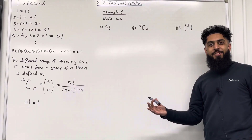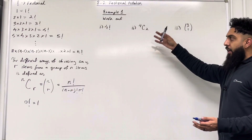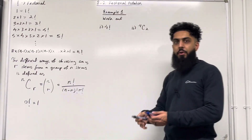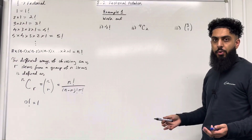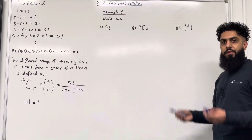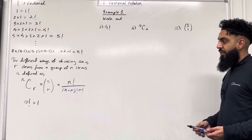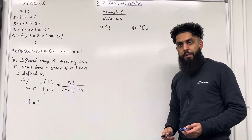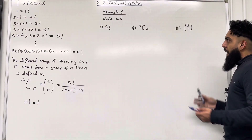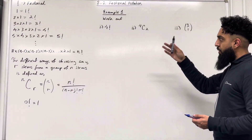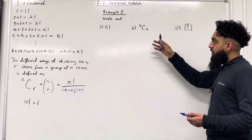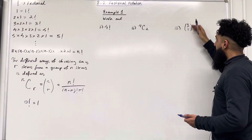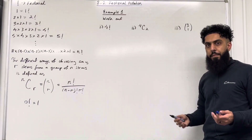Let's have a look at example 1. Before I cover example 1, the proof of 0 factorial equal to 1 can be found on my YouTube channel, so you can go ahead and watch that video. Example 1: work out part 1 — 4 factorial; part 2 — 4 choose 2; part 3 — (3,1), which is the same as 3 choose 1.